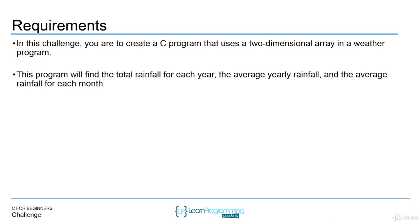This program will find the total rainfall for each year, the average yearly rainfall, and the average rainfall for each month. So those three things are going to be output.